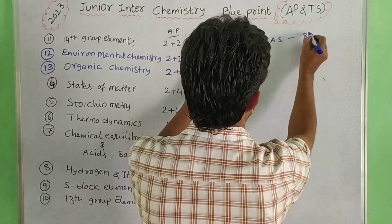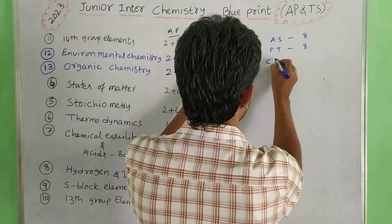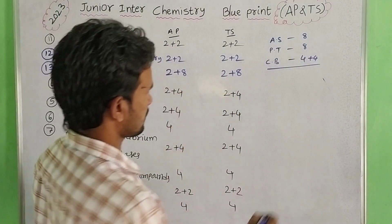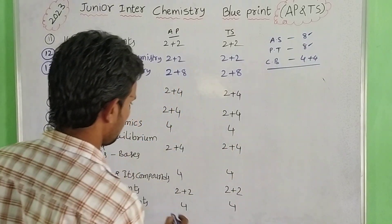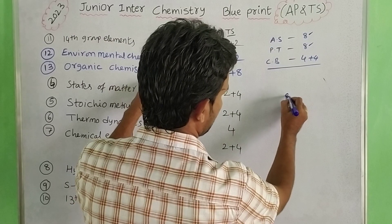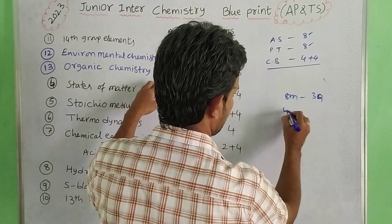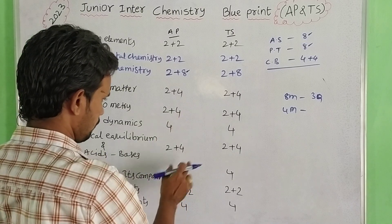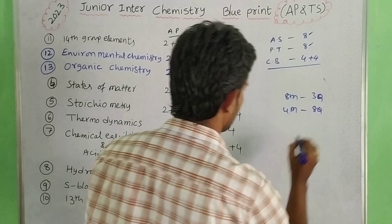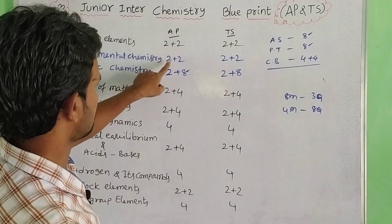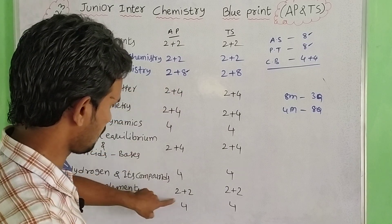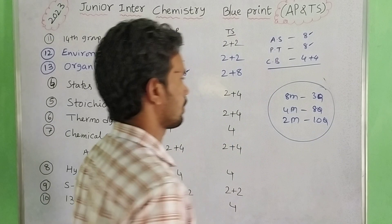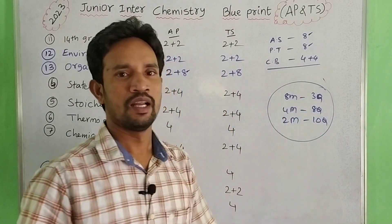So students, 1st: atomic structure 8 marks, periodic table 8 marks, chemical bonding 4 plus 4. Organic chemistry 2 marks to 10. Public papers total: 8 marks, 3 marks, 4 marks, 8 marks, 2 marks, 10.